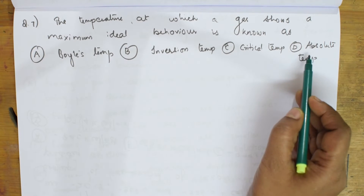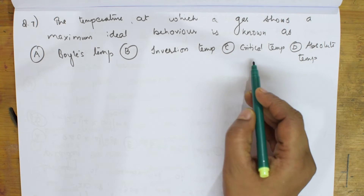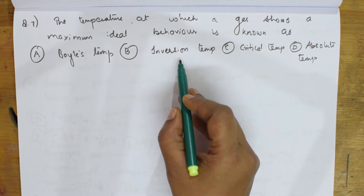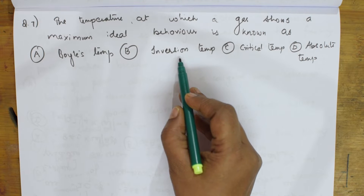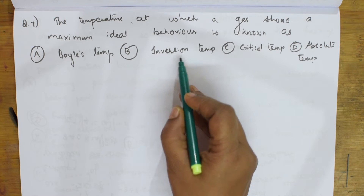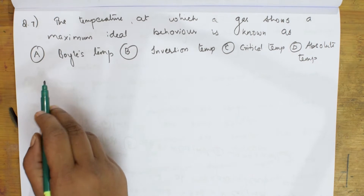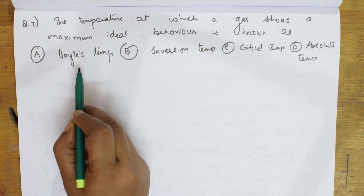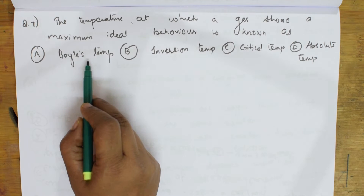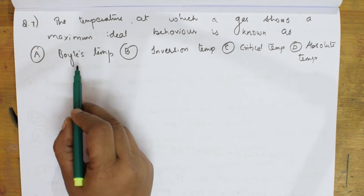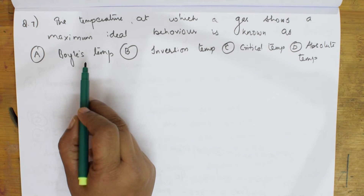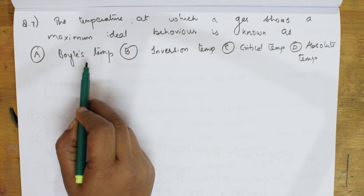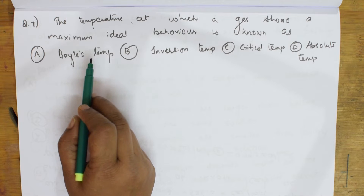So: absolute temperature is measured from absolute zero; critical temperature is where the gas cannot be liquefied; inversion temperature is where the gas is neither heated nor cooled. Boyle's temperature is the temperature at which a real gas exhibits ideal behavior — so this is the correct option.